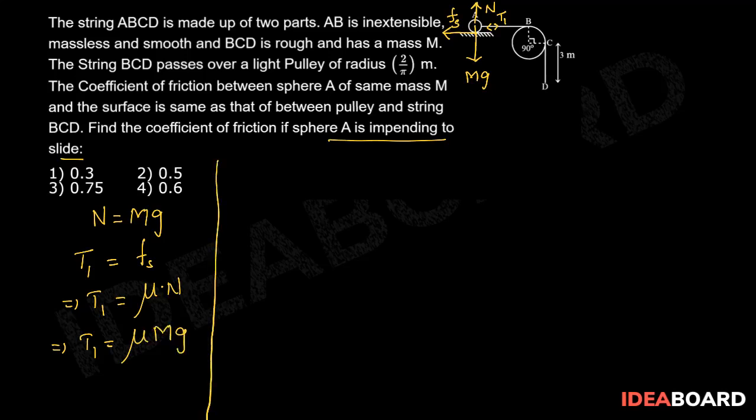Now first, let us calculate the length of BCD wire. It is equal to length of BC portion plus length of CD portion. Length of BC is 1 fourth of 2 pi r